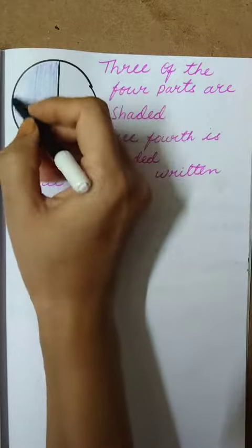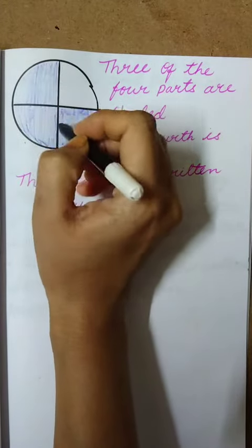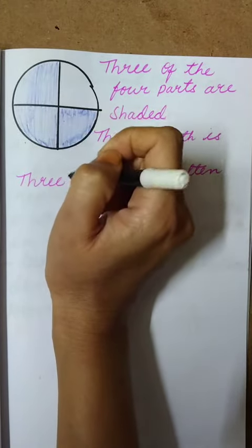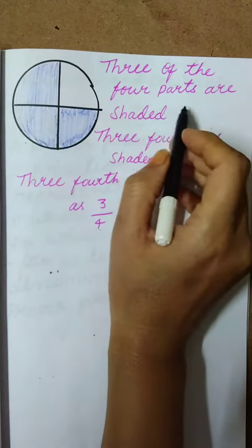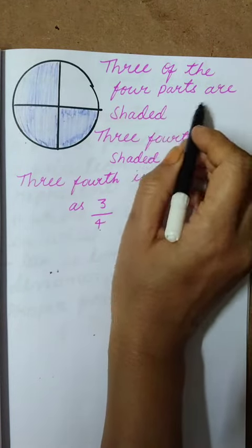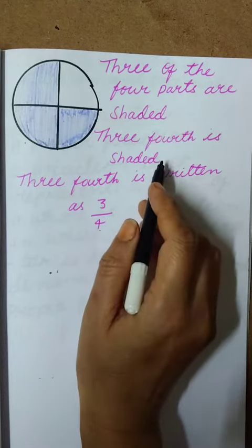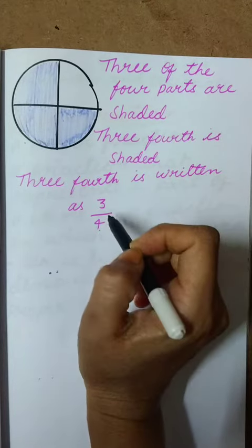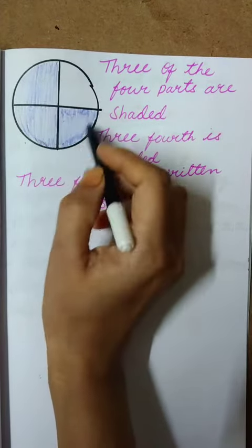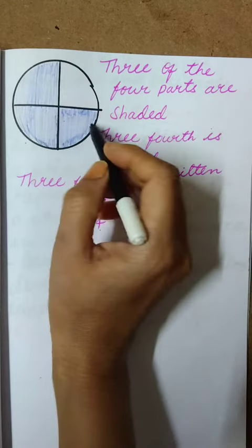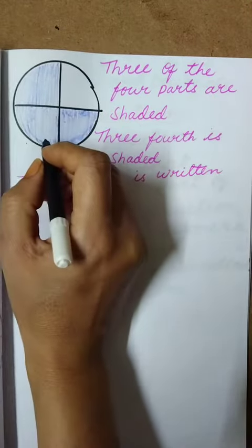One more whole I have taken. In that I am making into four equal parts, and three I have shaded. Three of the four parts are shaded — three fourth is shaded. We can write it as 3 by 4. Total parts are four in the denominator, and three we have shaded in the numerator, so three by four.